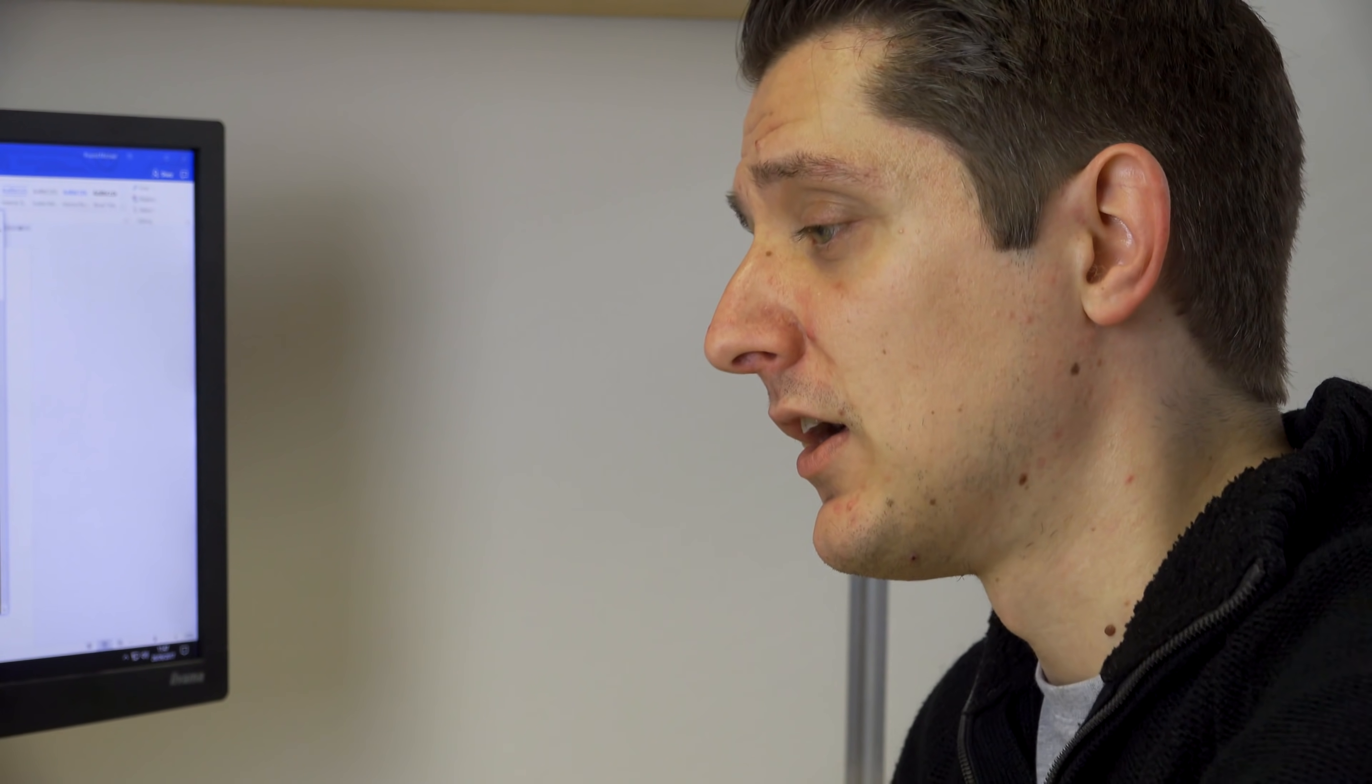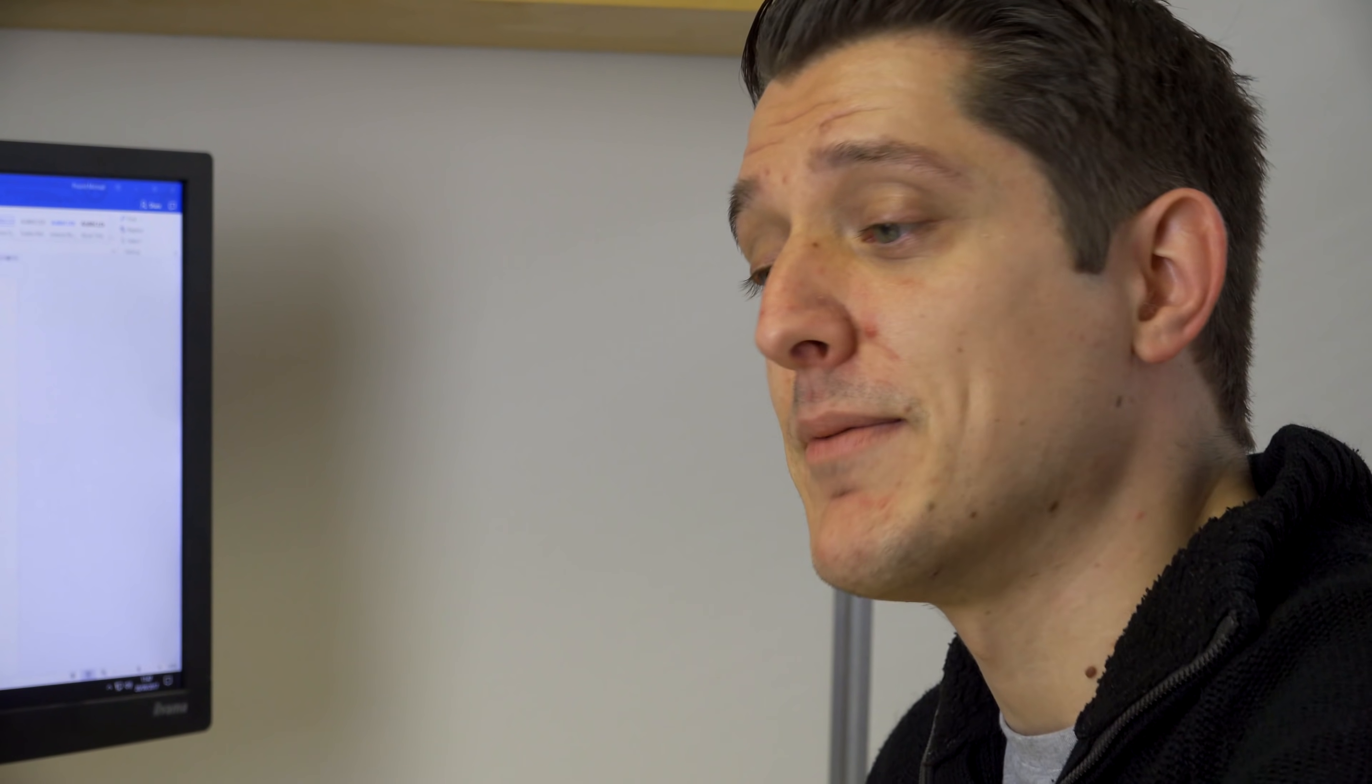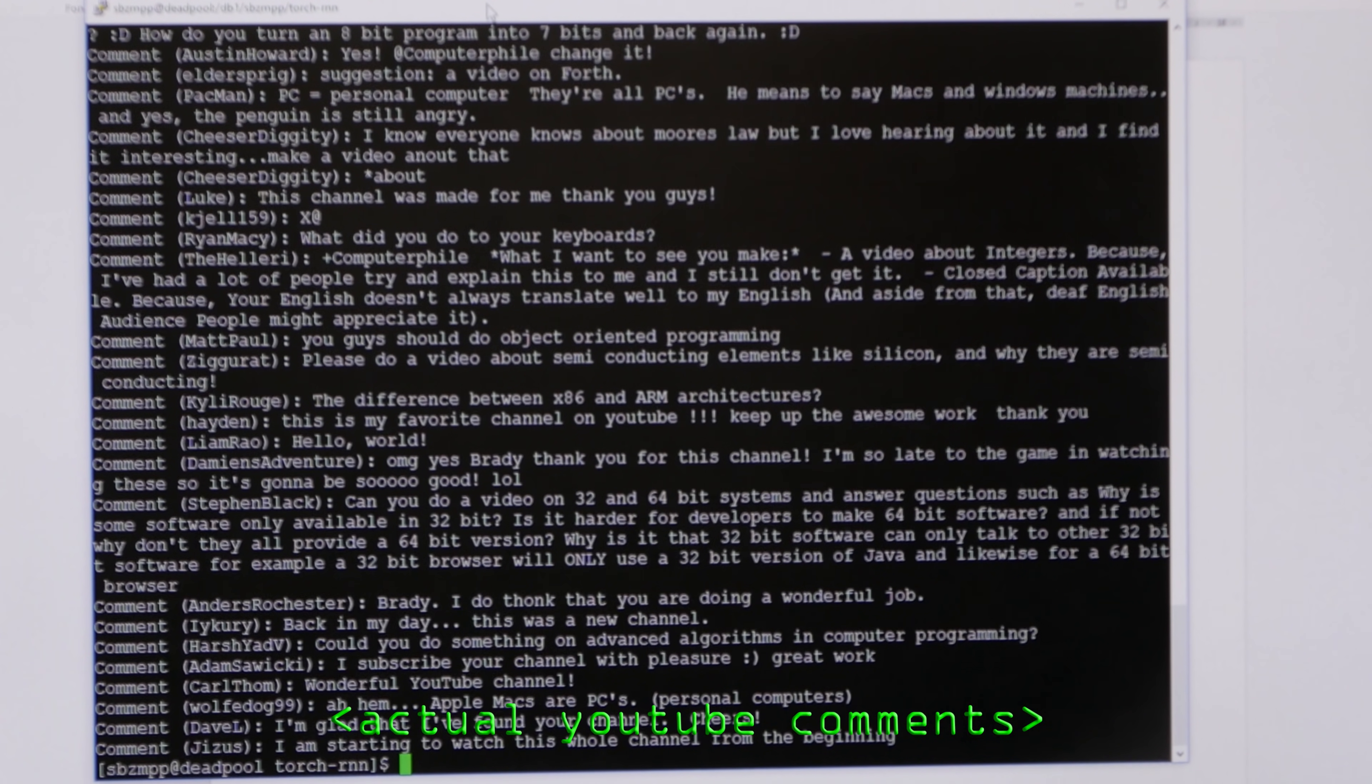Now, what I described just now is a recurrent neural network in its traditional form. The modern neural networks that we use to do this are slightly more powerful called long short-term memory. We'll cover maybe the architecture of those in a different video, but that's what I've trained here.